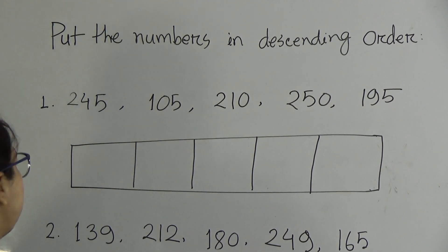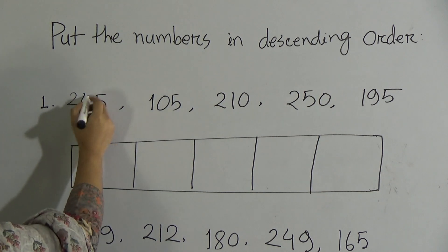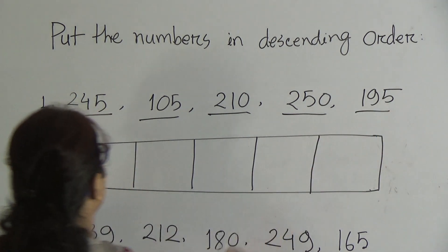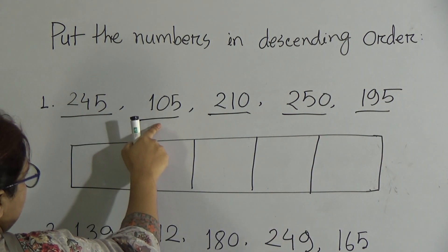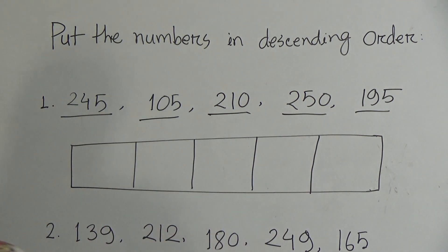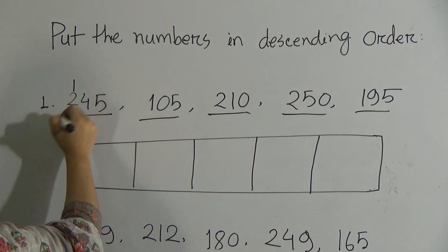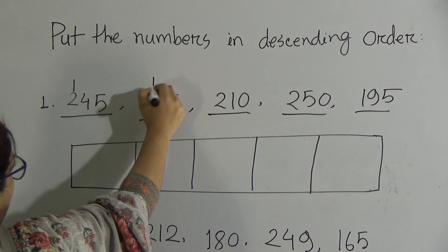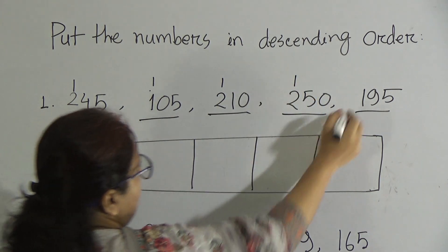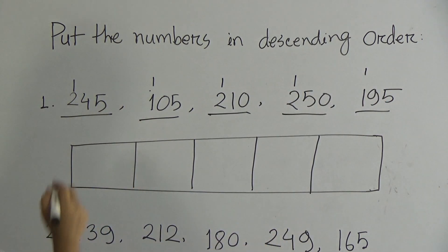Look at this board. Notice all digits are three digits here: 245, 105, 210, 250, 195. So all digits are three digits. Now notice first digits: two, first digit one, first digit also two, first digit here two, and first digit also one. So the biggest number is two, smallest number is one.